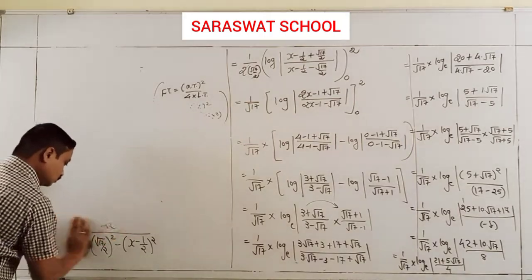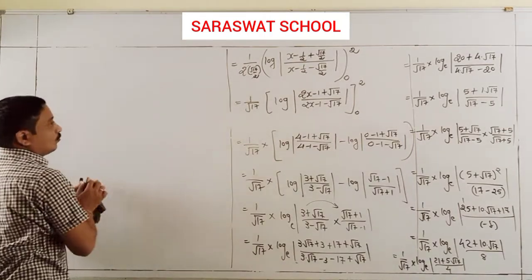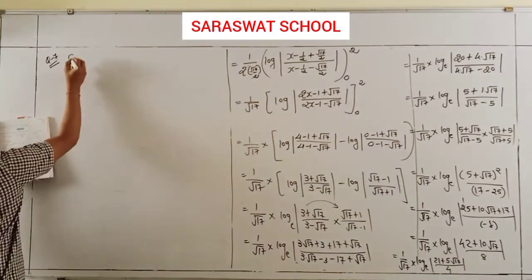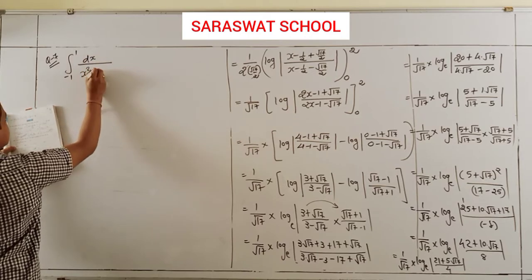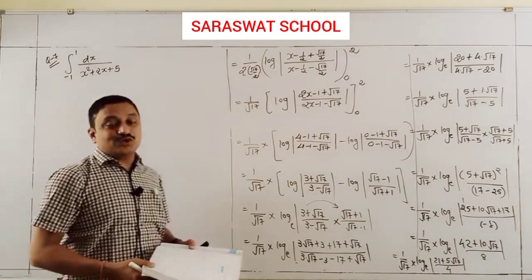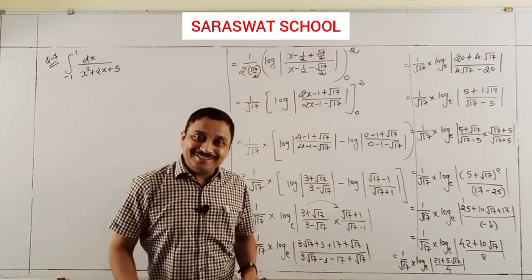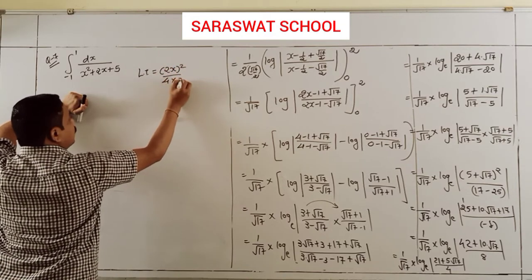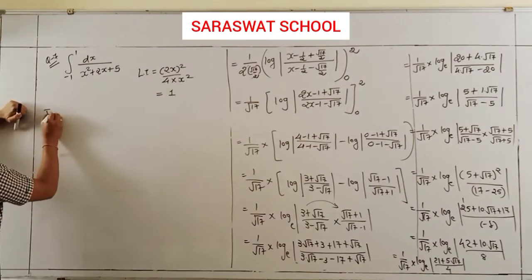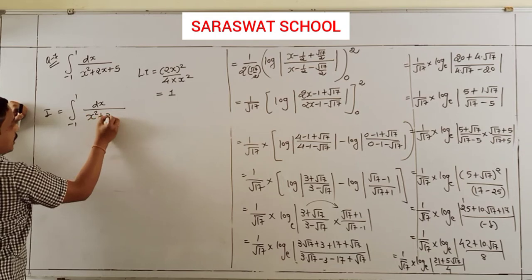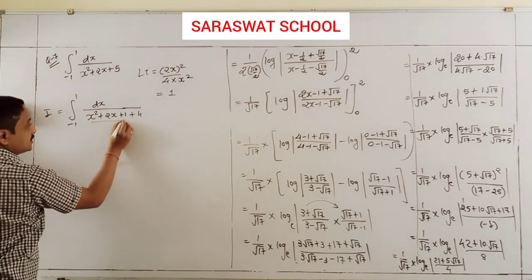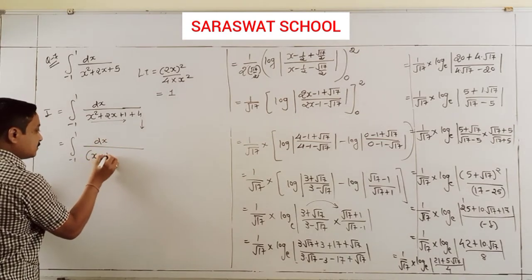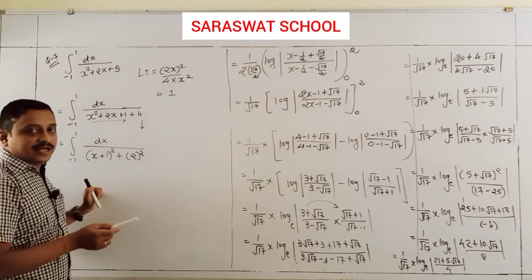Question 7: integrate from -1 to 1 of dx divided by (x² + 2x + 5). Here x² coefficient is positive, so I complete the square. Middle term squared divided by 4 into first term: using completing the square, x² + 2x + 5 = (x+1)² + 4 = (x+1)² + 2².